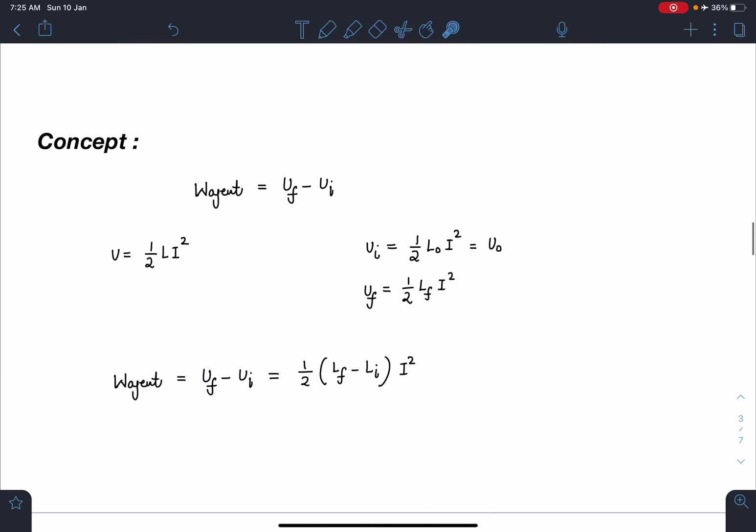Let us start. The concept part is W_agent = U_final - U_initial. This agent involves all kind of external work done whether it is battery, human or any other external factor which can supply or extract energy from this system. I can write this energy stored is nothing but half LI² where L is the self inductance. I have to think about this problem from the idea of self inductance.